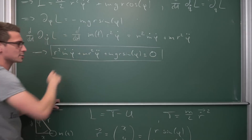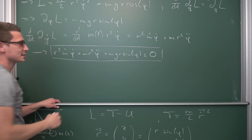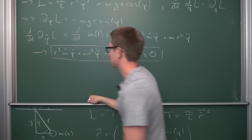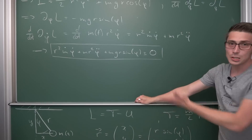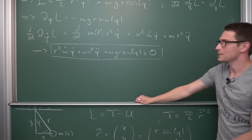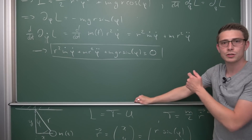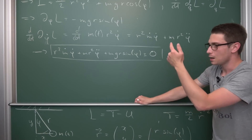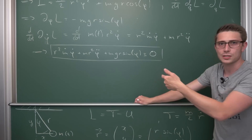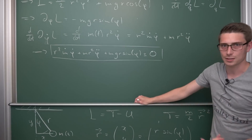You can divide both sides by r squared to get a slightly nicer expression. This is the equation of motion for the pendulum which is going to lose its mass overall.